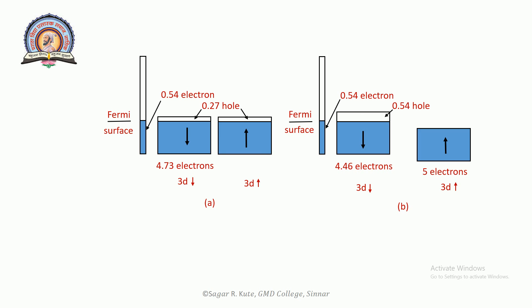The 4s band contains approximately equal numbers of electrons in both spin directions, so we have not divided it into sub-bands. The net magnetic moment of 0.54 μB per atom arises from the excess population of 3d spin-up band over the 3d spin-down band. It is often convenient to speak of magnetization arising from 0.54 holes in the 3d spin-down band.